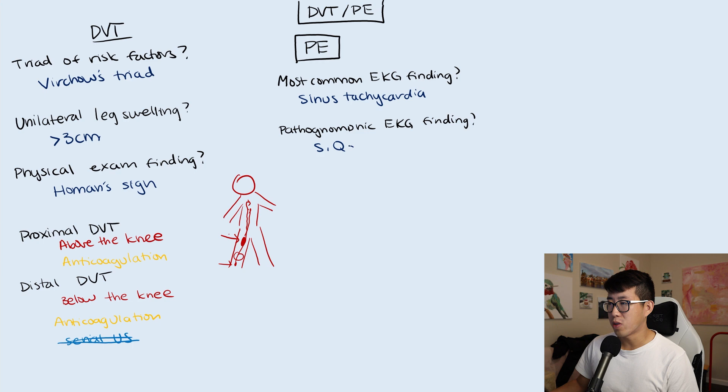But there is a more pathognomonic EKG finding, and this is why attendings love to ask this because it's kind of a trick question. The pathognomonic EKG finding is S1Q3T3. You may be asking, what the heck is S1Q3T3? Basically what this describes is, if I draw this out, you have an EKG with lead one and lead three.